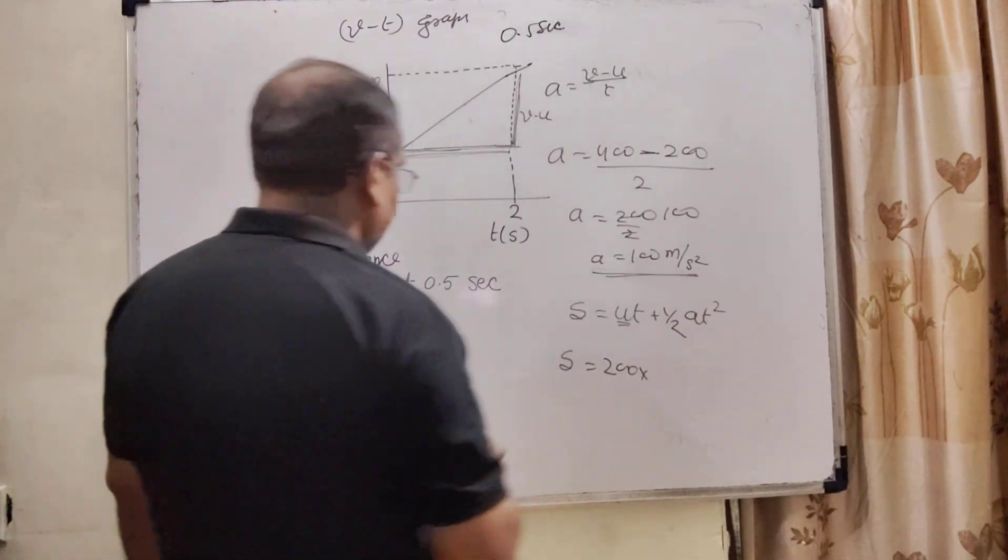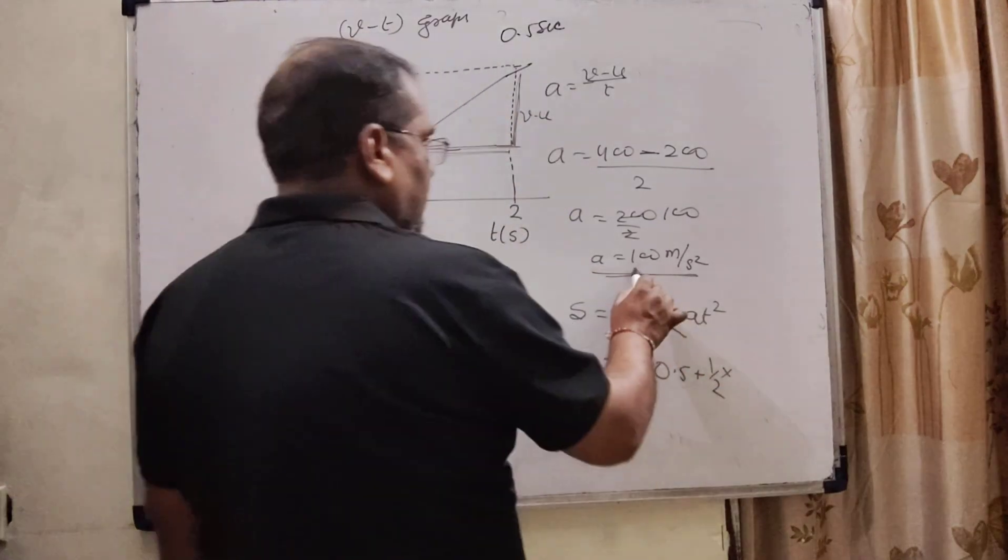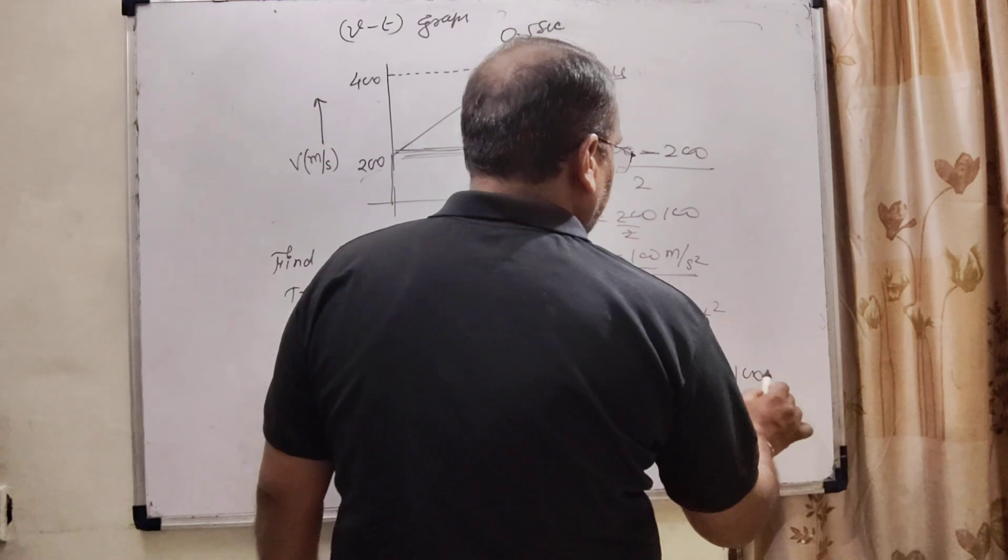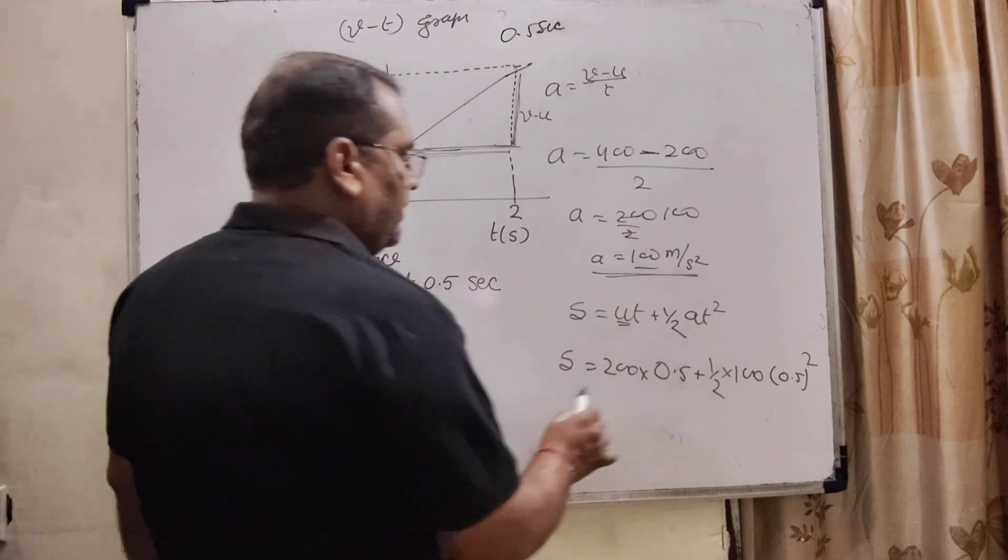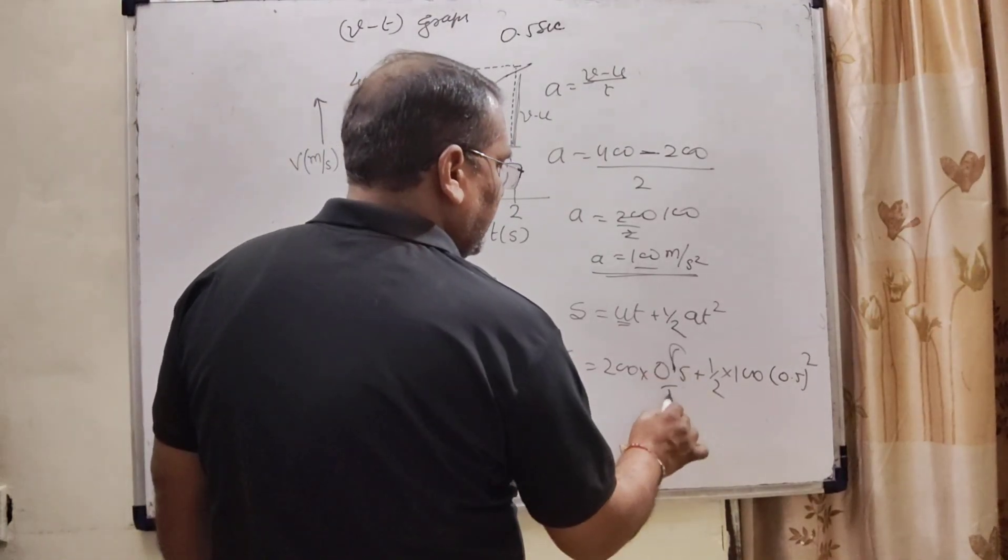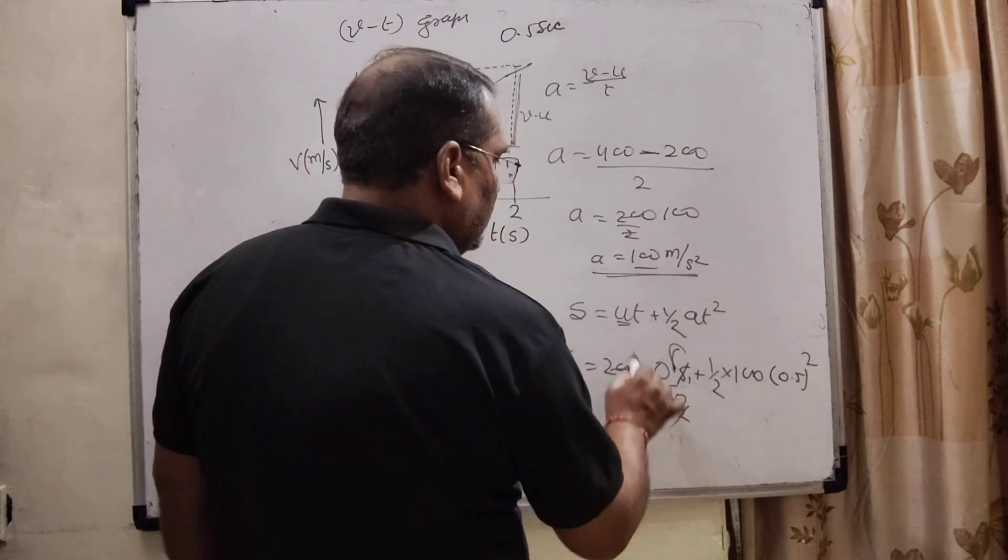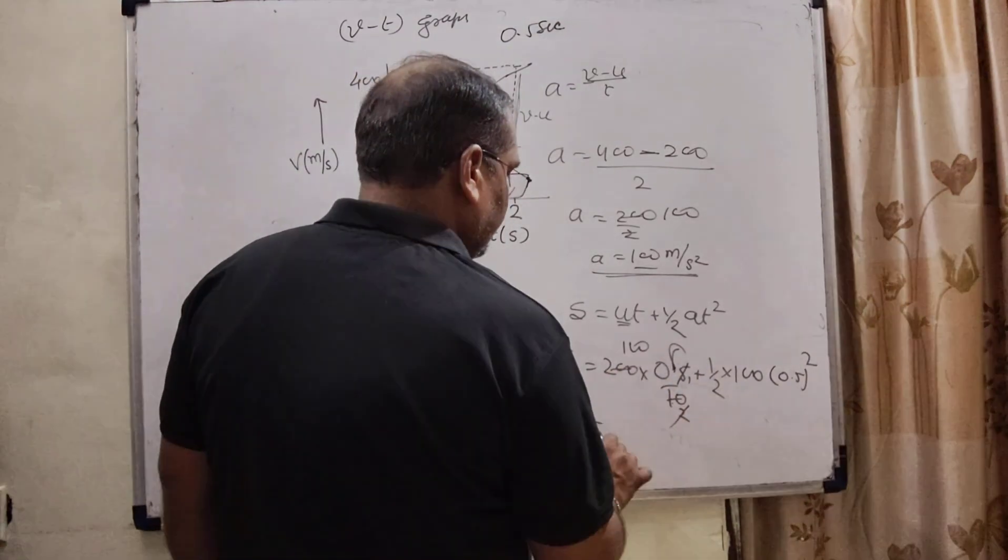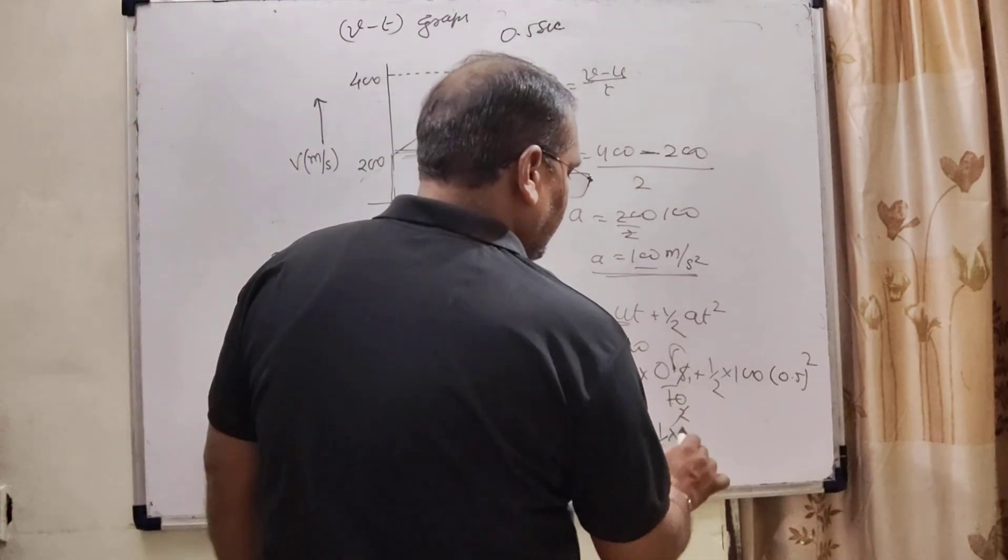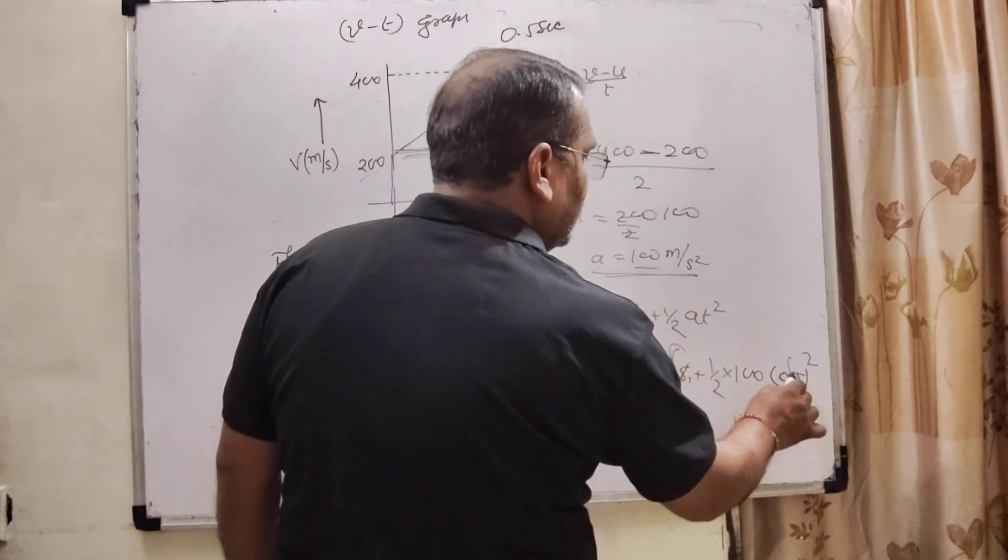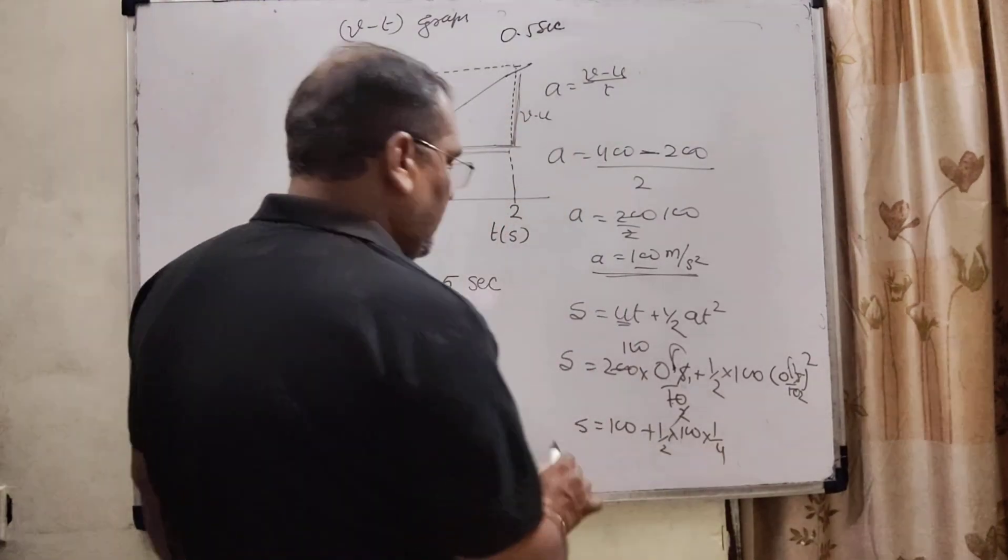And time, that is 0.5, plus 1 by 2. Here, acceleration, that is 100. And again, the time, that is 0.5 square. So here, removing this decimal, 5 and the 5, 5 to the 10. That is 100. Here, 1 by 2 into 100.